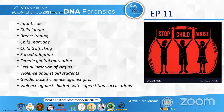The types of child abuse include infanticide, child labor, breast ironing, child marriage, child trafficking, forced adoption, female genital mutilation, sexual initiation of virgins, violence against girl students, gender-based violence against girls, and violence against children with superstitious accusations.